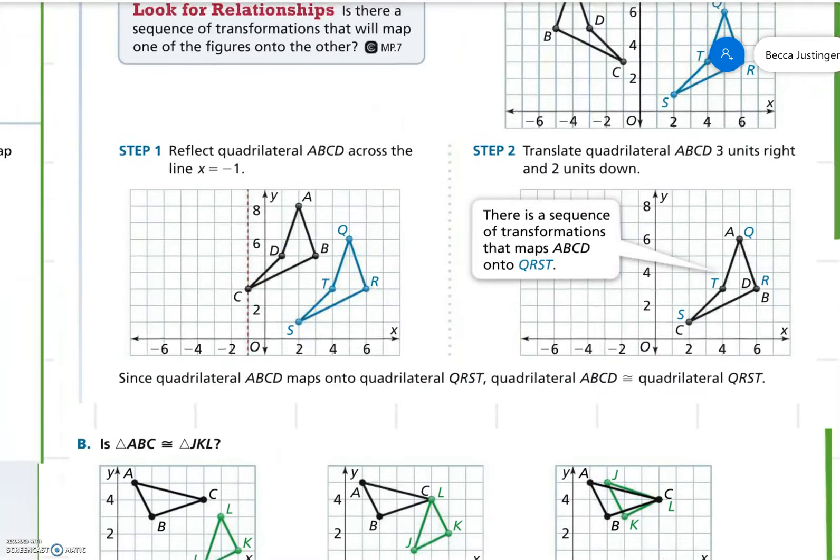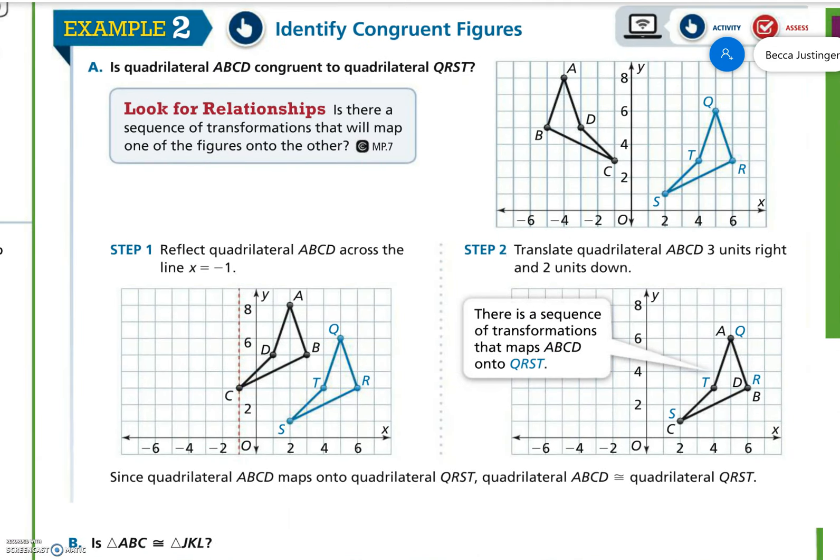Okay, example number two. Identify congruent figures. Is quadrilateral ABCD congruent to quadrilateral QRST? Okay, so the first thing I want to mention is that the first letter should line up with the first letter. So I want A and Q to line up with each other. Then the second letter and the second letter. So that means B and R should line up with each other. Following that pattern, C and S. And D and T. So that might be obvious with these figures because they're so oblong, but sometimes it's not as obvious with a square or a rectangle.